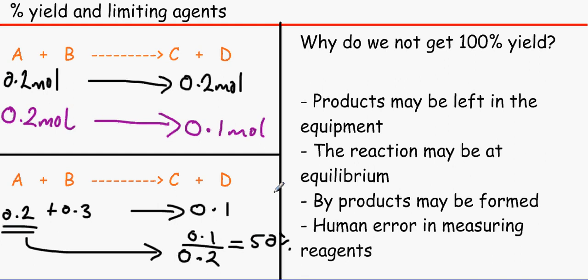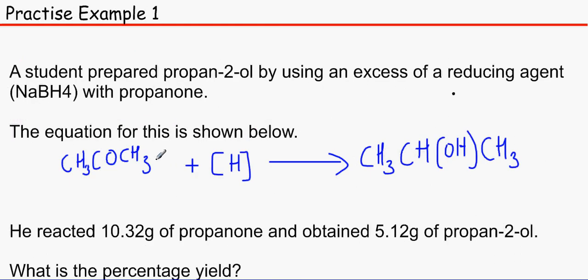So just remember the one with the smallest amount of moles will be the maximum theoretical moles that you can achieve at the end of the reaction. So let's have a look at this practice example, and this is just a variant from the OCR question.